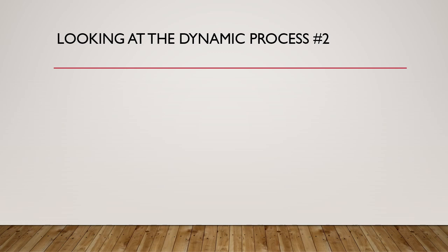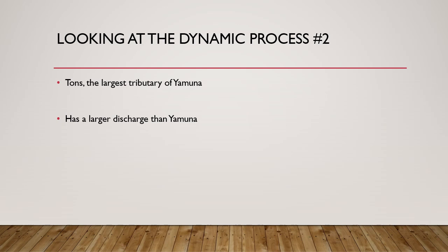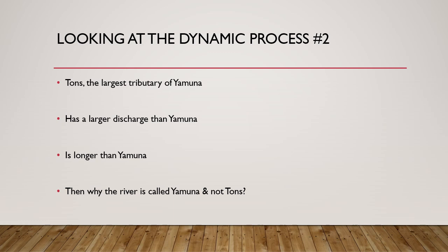Tons is the largest tributary of Ganga in terms of water carried — it actually has a larger discharge than Yamuna. So by rule, the name of the combined entity should be Tons, or more accurately the ancient Saraswati. However, we still call it Yamuna. Even taking length into consideration, the Tons river is longer because its glacier — Swarg Rohini — is higher than that of Yamuna.